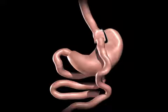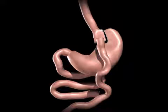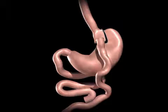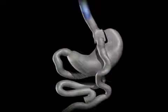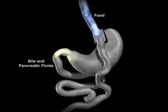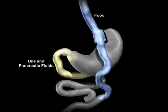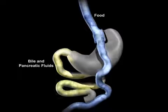Bypassing a portion of the small intestine decreases the absorption of calories and nutrients. The upper portion of the small intestine is reconnected to the lower portion of the intestine. The bile and pancreatic fluids from the liver and pancreas allow food to be completely digested.